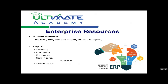Human Resources, as we know, is basically the employees at a company or a workplace. As for the capital of a company, it can be allocated between inventory, purchasing, customers, cash and safes, cash and banks, and other forms. It's basically all the money that the company possesses, divided or coming in different forms.